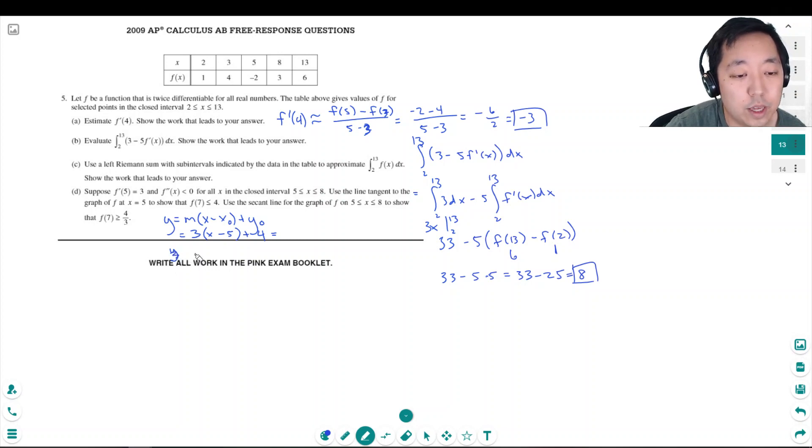So f of 7 is approximately equal to if I plug in 7 into this line, I get 3 times 7 minus 5 plus negative 2. And that's 3 times 2, it's 6. Wait, this is not 4, minus 2. It's going to say minus 2. 6 minus 2, that's equal to 4. Okay, so my tangent line approximation.